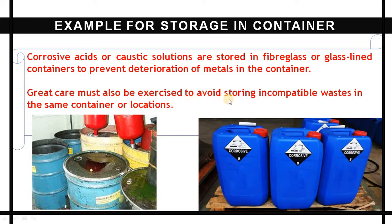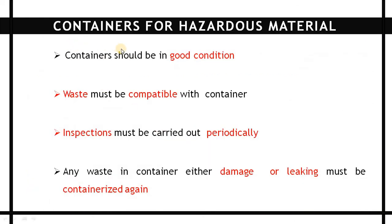Great care must also be exercised to avoid storing incompatible waste in the same container or location. The characteristics of containers for hazardous waste are: the container should be in good condition, waste must be compatible with the container, inspection must be carried out periodically, and any waste container that is damaged or leaking must be re-containerized.